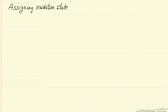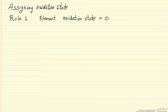The first rule says that if we have an element, then the oxidation state of the atoms in that element are zero. For example, if we have an oxygen molecule, then the oxidation state of each atom in the molecule is zero.